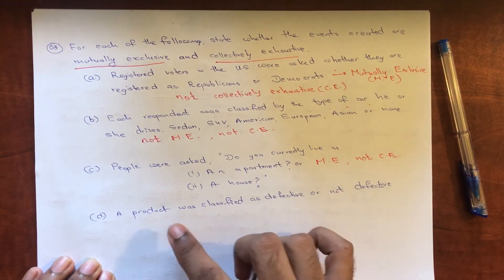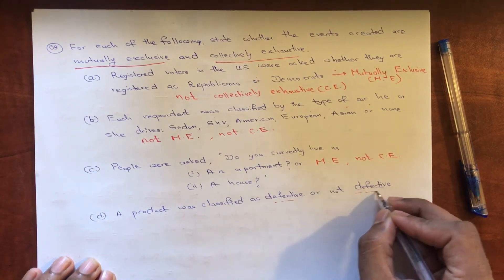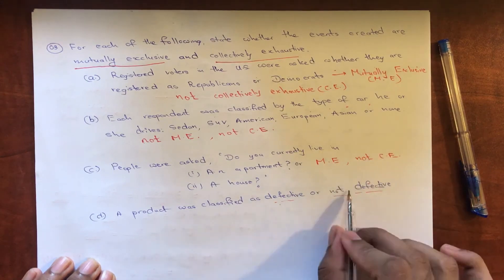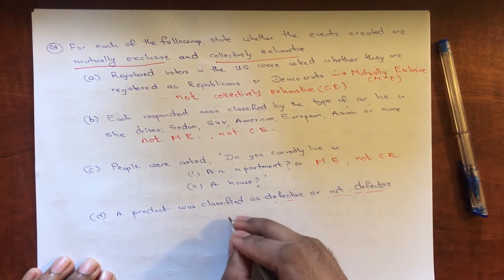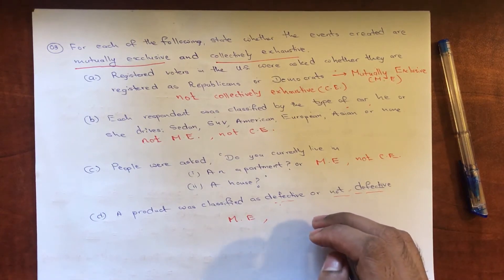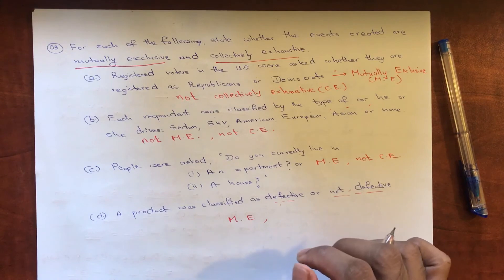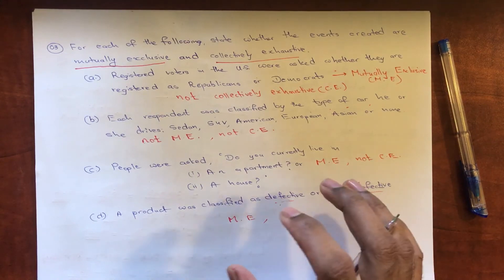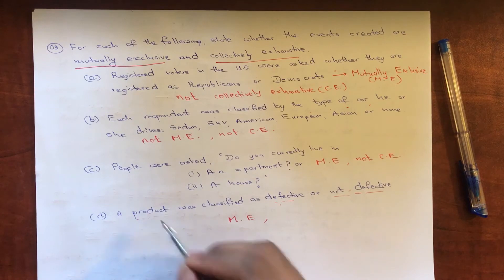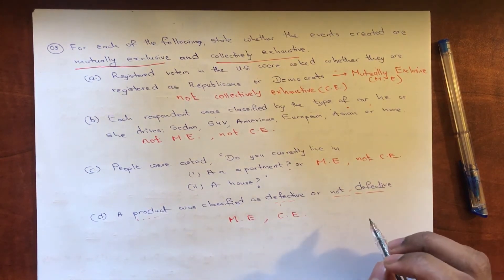For part D — a product classified as defective or not defective — this is mutually exclusive because both cannot occur at the same time. It is also collectively exhaustive because defective or not defective covers the entire sample space of all products.